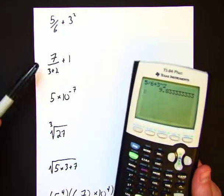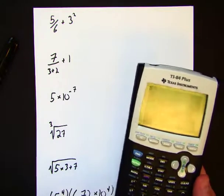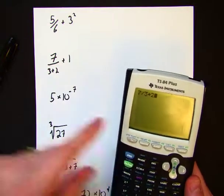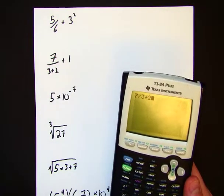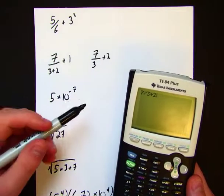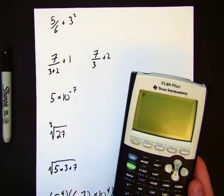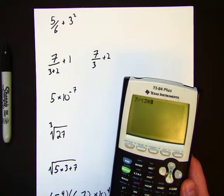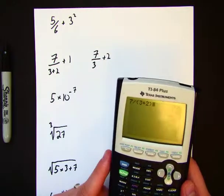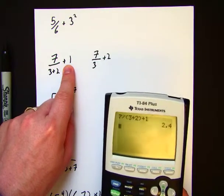The second example here, 7 divided by 3 plus 2 plus 1, how do I do that? Again, I hit clear. I'm going to say 7 divided by, well if I just hit 3 plus 2, what this interprets it as is actually the calculator will think you're doing 7 divided by 3 plus 2. The only way to get around that is to go 7 divided by, and in parentheses, 3 plus 2. 7 divided by 3 plus 2, and then I can hit plus 1. This again will be just like this one here, which will give me my answer of 2.4.